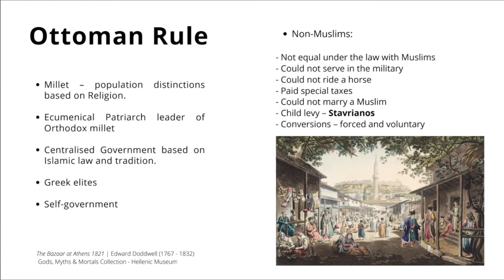There has been a significant overemphasis in history books over the last 50 to 70 years on how bad they were — there is an element of truth, and we'll discuss that next week. Firstly, if you were a non-Muslim, you were not equal under the law with Muslims: you could not ride a horse, carry a weapon, and you had to pay special taxes. Those taxes were on many occasions localized — the rationale being that certain taxes prompted individuals to convert to Islam, so there was a deliberate plan in that taxation system.